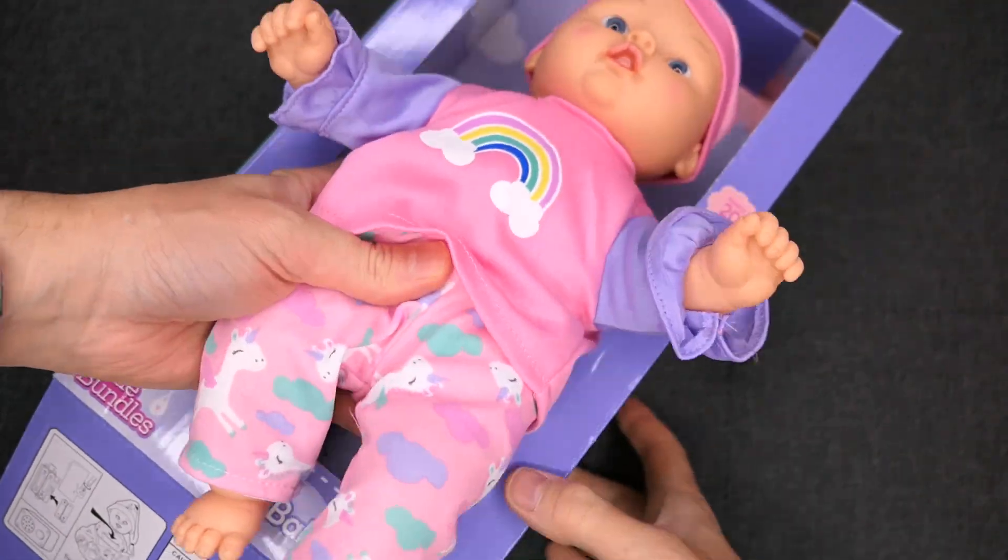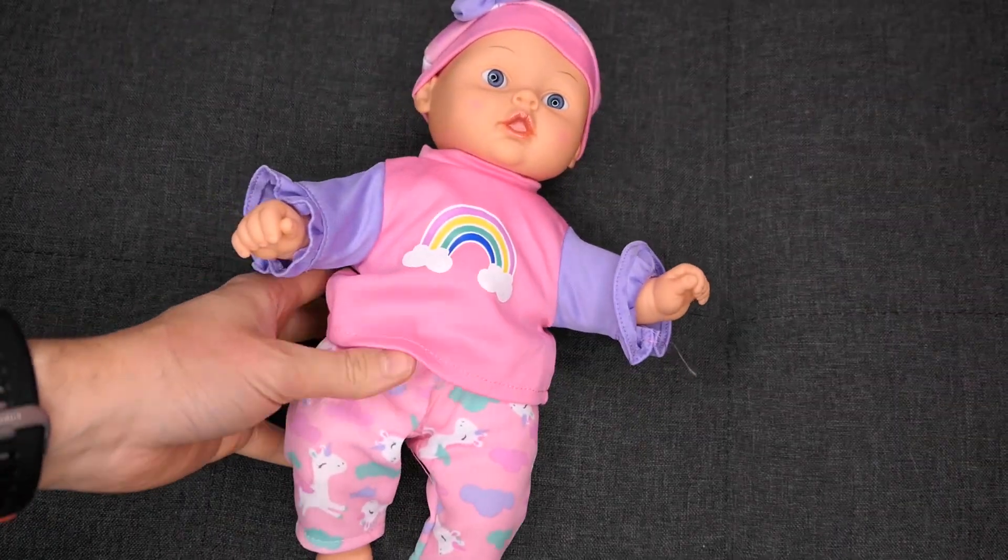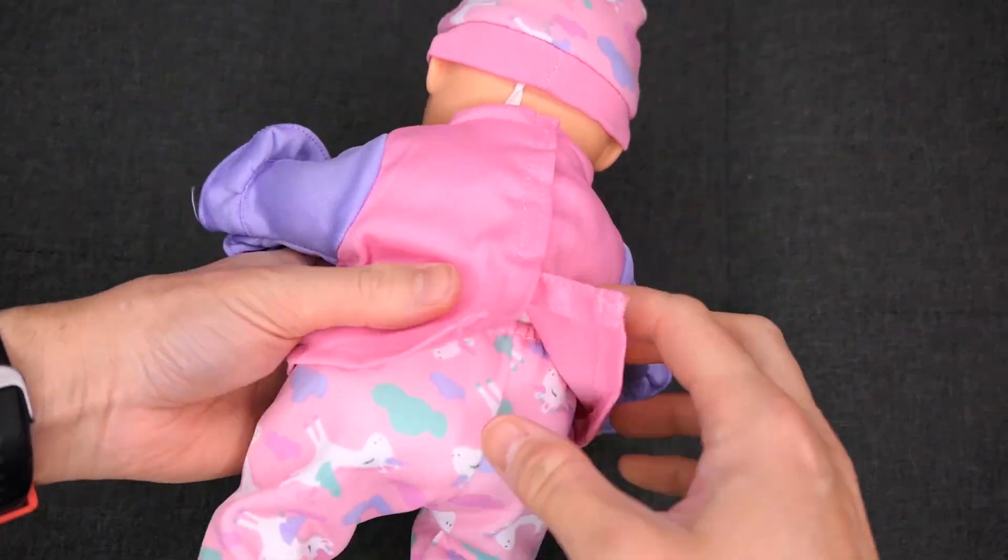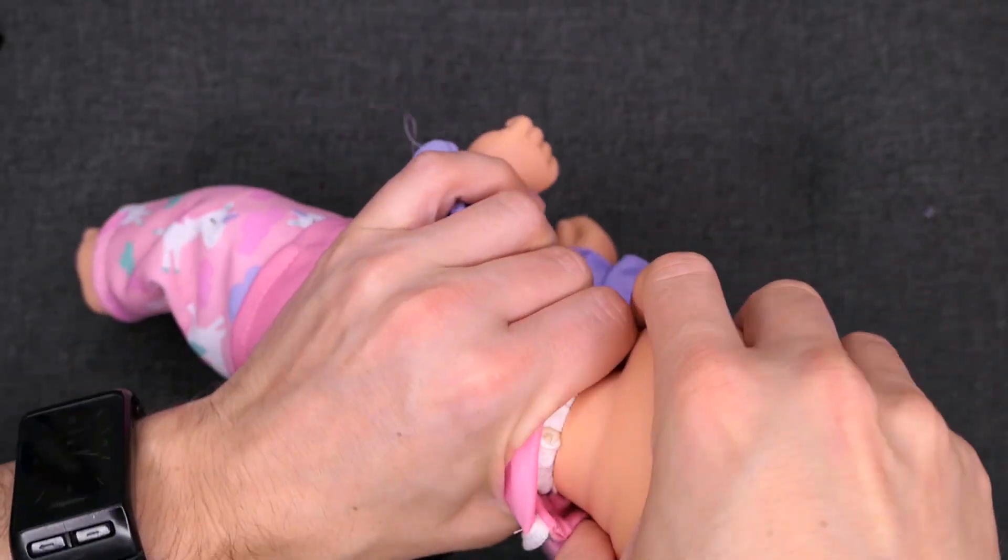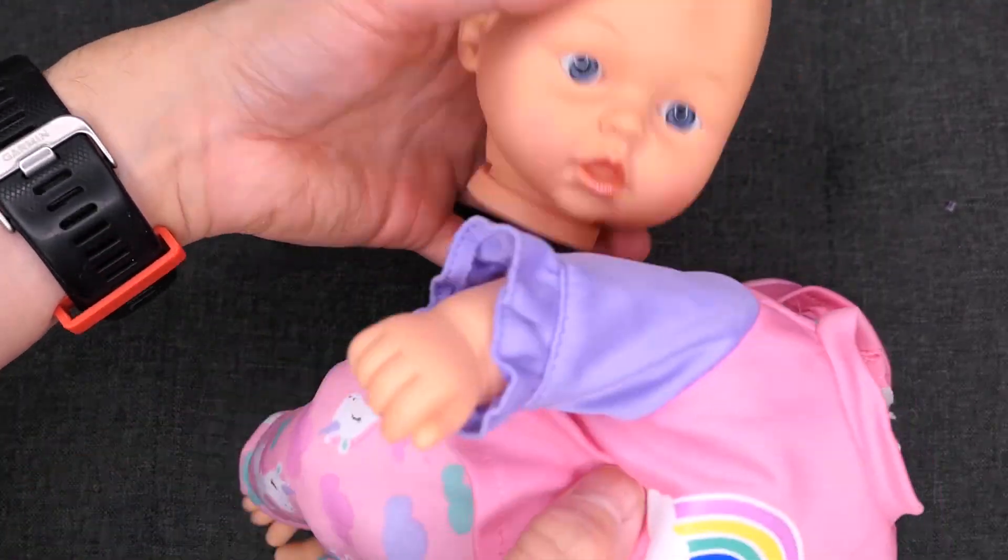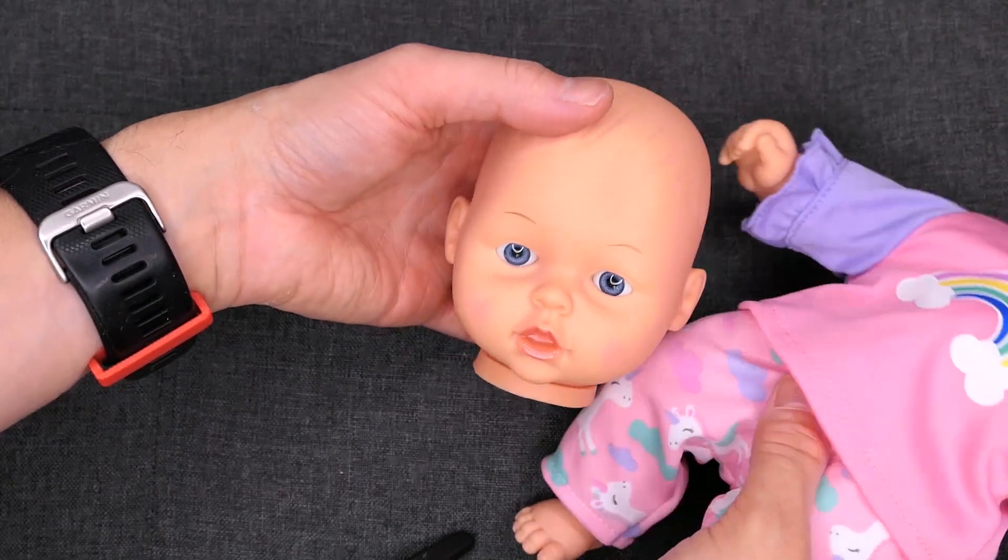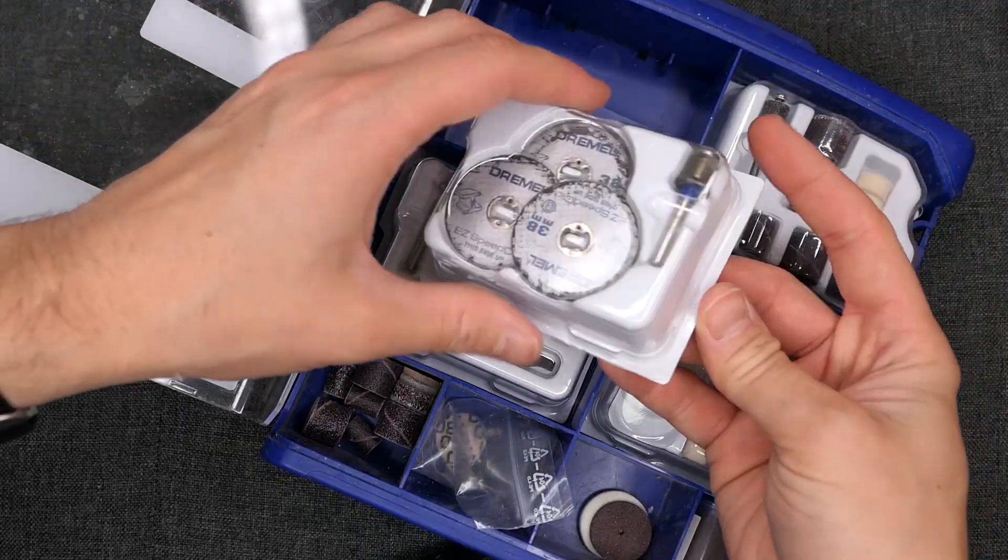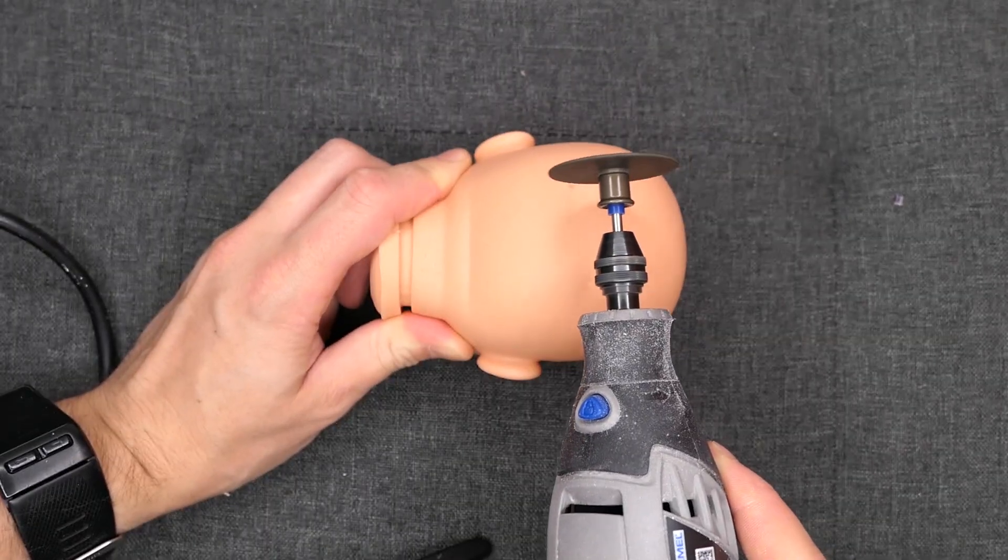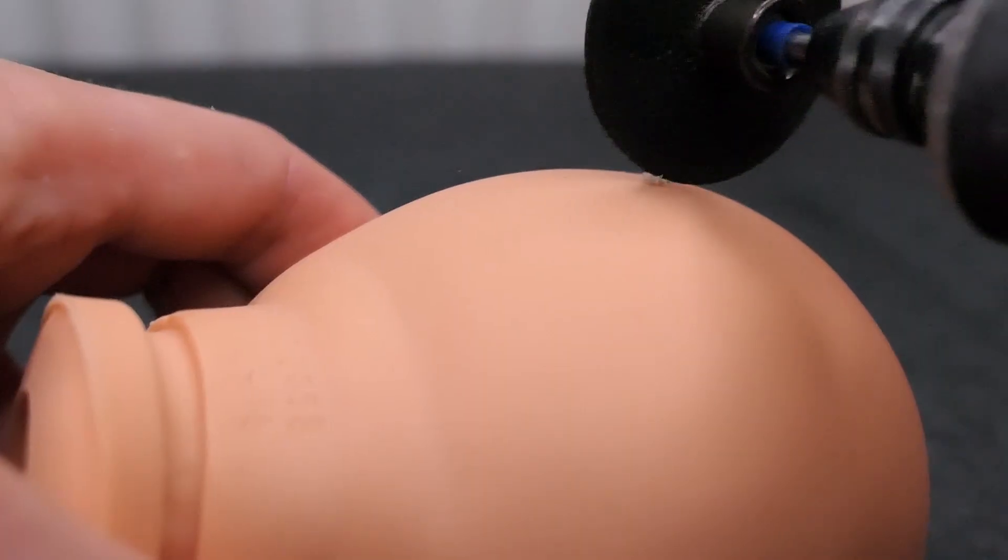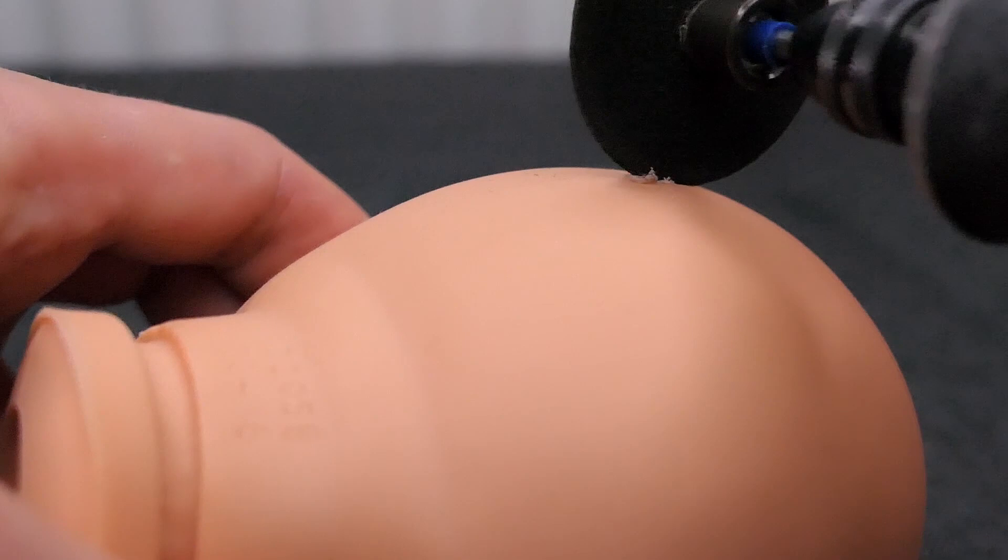Now to attach the eyes to the doll. First remove the head. Now using a Dremel or similar tool, make an access port at the back of the head so that we can insert the eye mechanism through it.